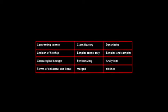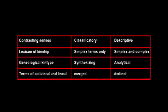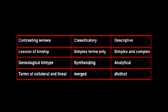Third, the contrast bears a sense of dispersion of the blood line. In classificatory systems, several collateral lines — near and remote — are merged into the lineal line, thus theoretically preventing a dispersion of blood. On the contrary, the descriptive system keeps collateral lines distinct and purposefully divergent from lineal lines, resulting both theoretically and practically in a dispersion of blood. In summary: classificatory systems use simplex terms, are synthesizing in nature, and merge collateral and lineal lines; descriptive systems use both simplex and complex terms, are analytical, and keep collateral and lineal lines distinct.